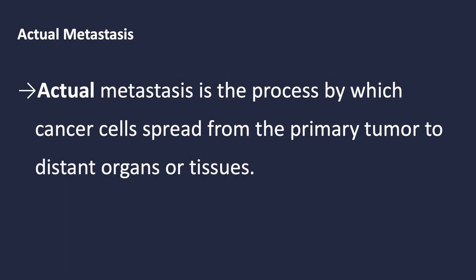Actual metastasis refers to the process by which cancer cells spread from the primary tumor to distant organs or tissues within the body. This is a complex biological phenomenon where cancer cells break away from the original tumor, invade surrounding tissues, and enter the bloodstream or lymphatic system. Once in these systems, the cancer cells travel to new locations, where they exit the vessels and establish new tumors. This spread can occur long before we can detect it with current medical technology, making it a silent and often deadly phase of cancer progression.